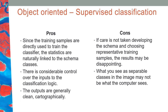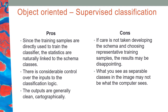Here is a graphic showing the workflow of object-based supervised classification. You have your prepared imagery, segment it before creating training samples, and then whichever classifier you are using develops the thematic raster with labeled land cover classes. You are very aware by now of the iterative nature of image classification — you may need to refine the workflow through several iterations until you get a land cover map with the accuracy you need. The pros are that training samples are directly linked to the land cover class scheme, and outputs are generally very clean cartographically. The cons are that if care is not taken developing the schema and choosing representative training samples, the results may be disappointing.